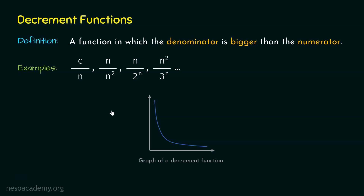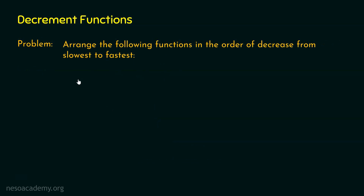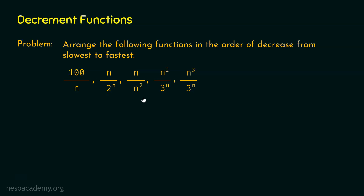Now let's solve one problem based on decrement functions. The problem is: arrange the following functions in the order of decrease from slowest to fastest. We need to arrange these functions starting from the slowest decrement function and ending at the fastest decrement function. I want you to try this problem on your own first — pause the video and try solving it before we go through the solution together.